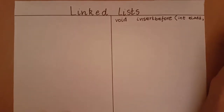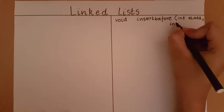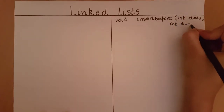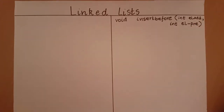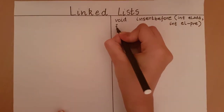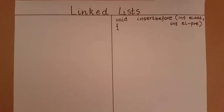The element I want to add to the linked list is going to be represented by el_add. The pre-existing element in the linked list before which we want to perform the addition is going to be stored in el_pre. So now we have defined the function.